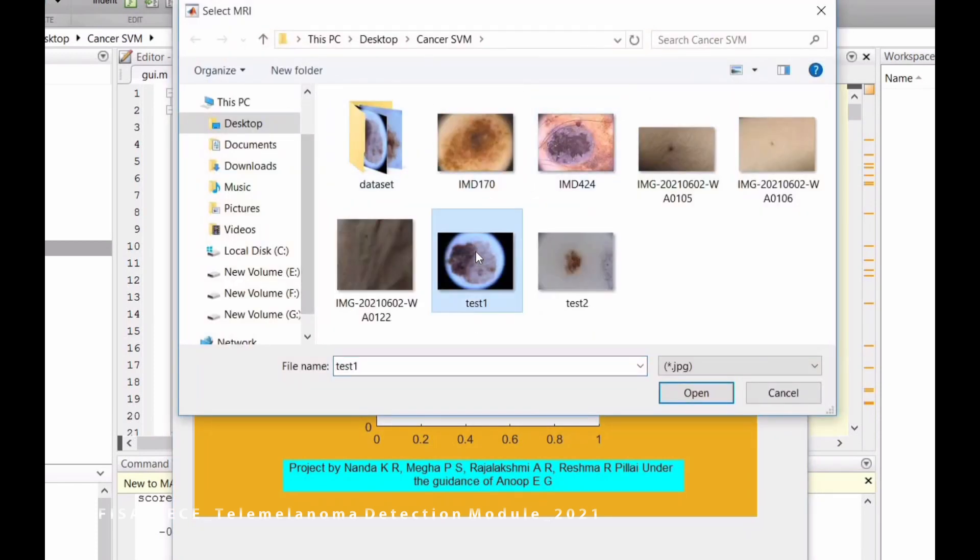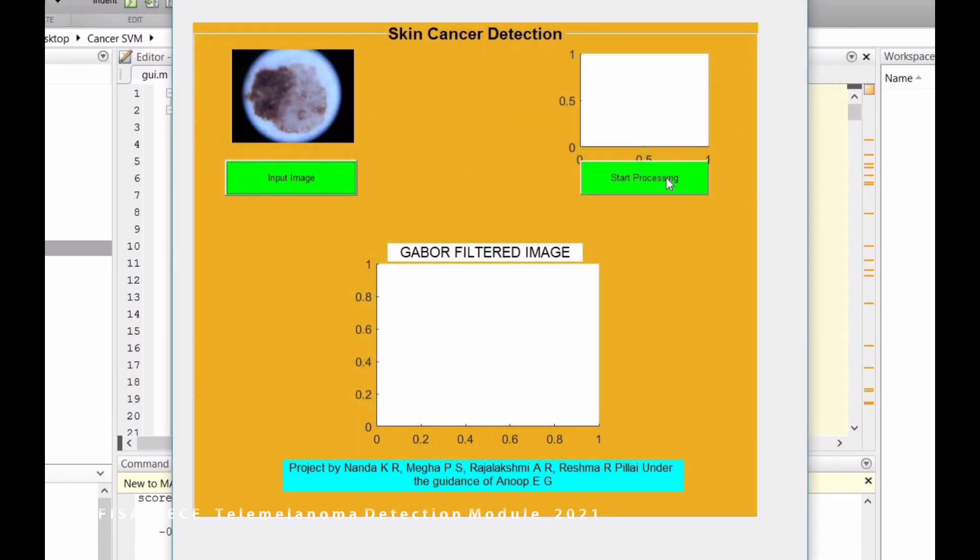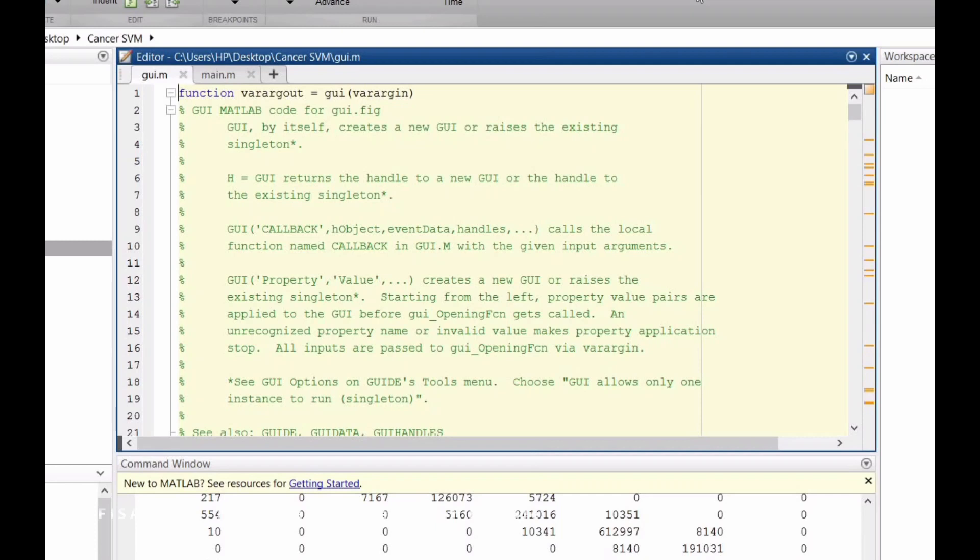A graphical interface is used. The skin image is taken as input to MATLAB. After completing pre-processing, segmentation, feature extraction, and classification using SVM classifier, the value of the input image is compared with the feature matrix of trained images. If the input image matches with the value of cancerous images in the trained set, then the input image is classified as melanoma.